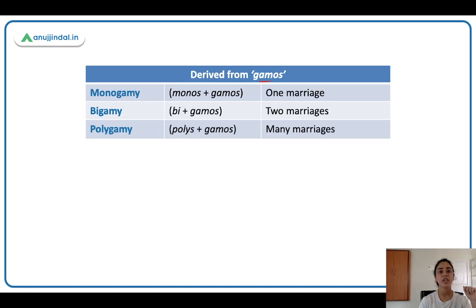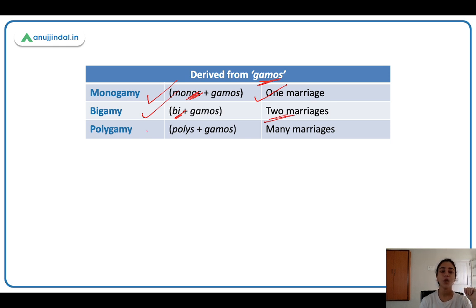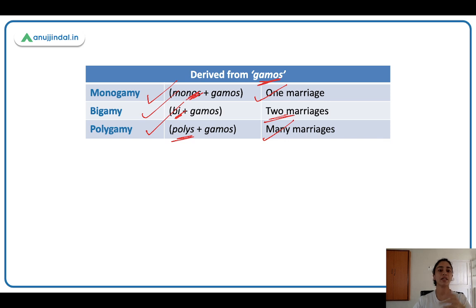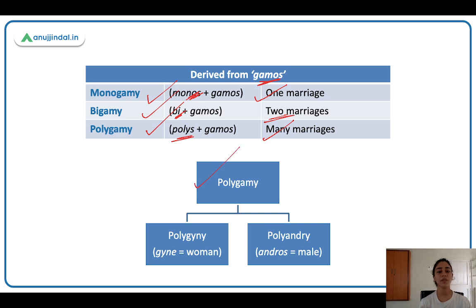From 'gamos' (marriage) come several words: monogamy — 'mono' means one, so one marriage, being married to one person; bigamy — 'bi' means two, being married to two people at the same time; polygamy — 'poly' means many, being married to multiple people at the same time, which is normal in some traditions. For gender-specific terms: polygyny refers to a man married to many women, and polyandry refers to a woman married to multiple men. Polygyny comes from 'gyne' (women) and polyandry from 'andros' (men).